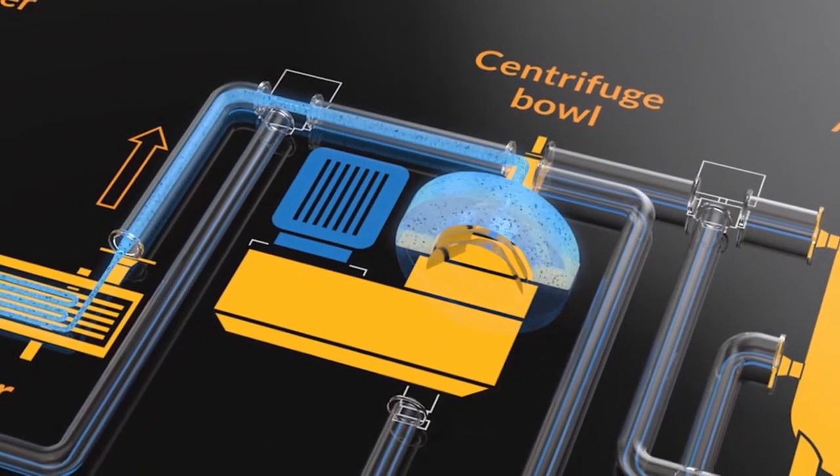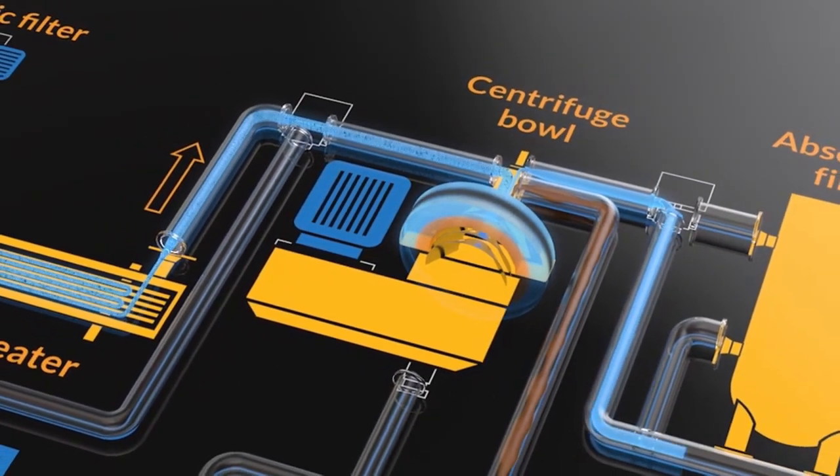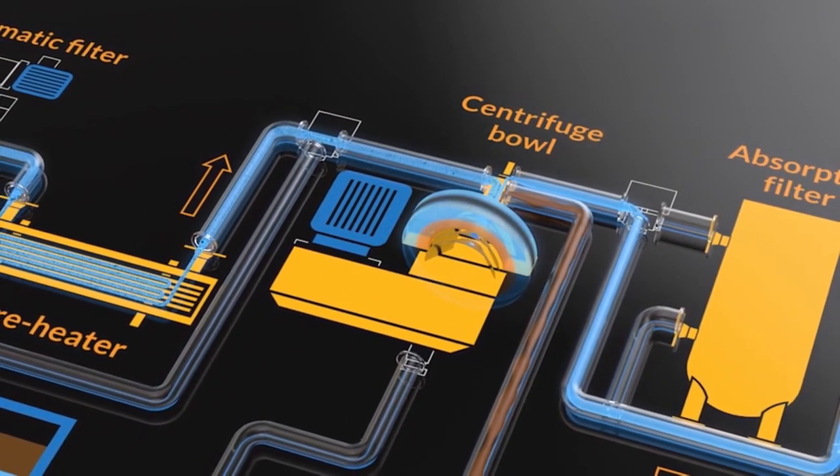Oily water is fed into the separator via a centreline feed tube. There are two outlets from the separator, one for oil and one for water.